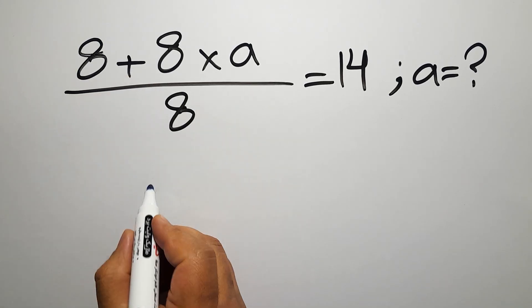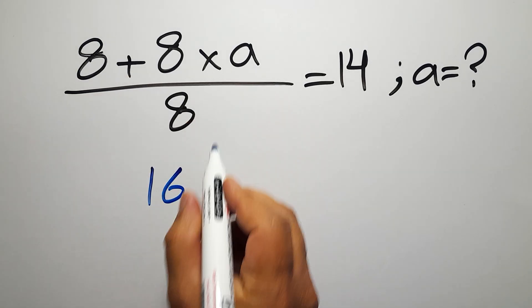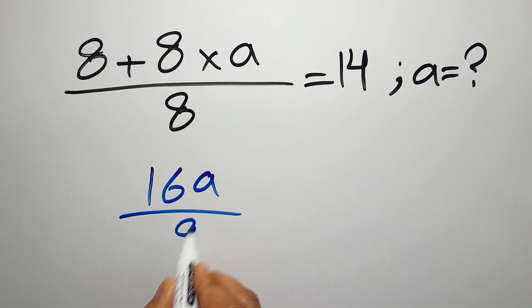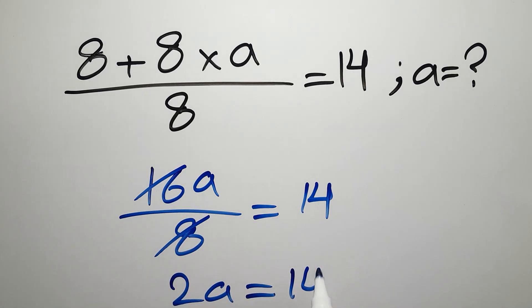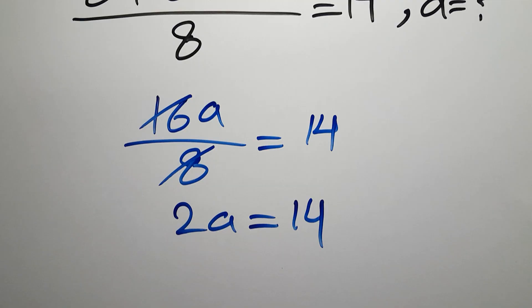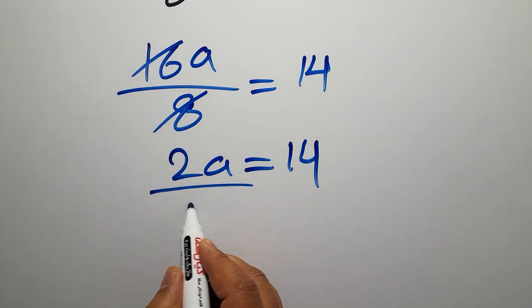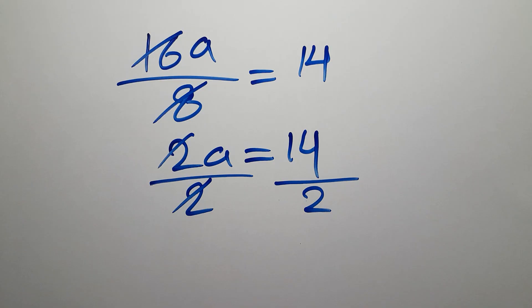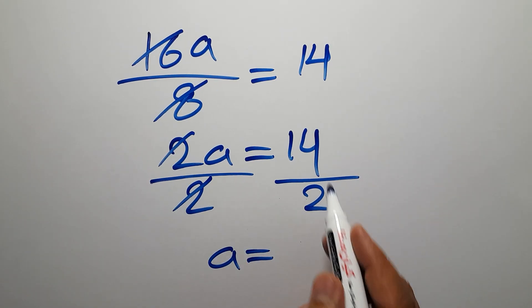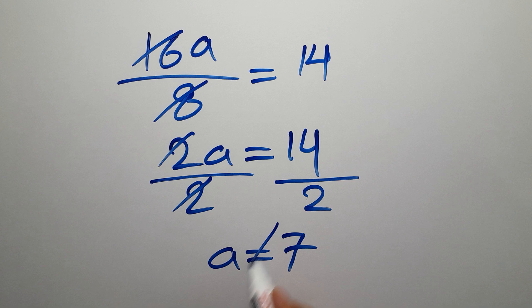8 plus 8 gives us 16, so 16a over 8 equals 14. 16 divided by 8 gives us 2, so 2a will be equal to 14. Now let's divide both sides by 2, these two and these two can cancel each other out, so a will be equal to 14 divided by 2, which gives us 7.